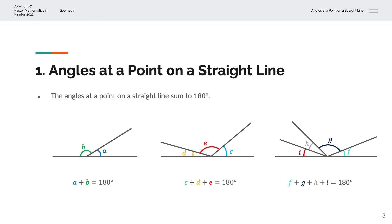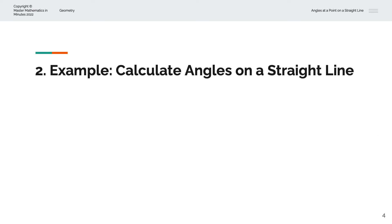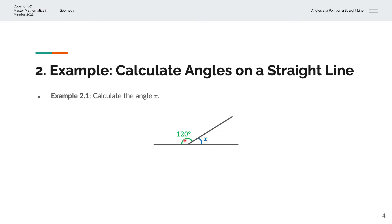Let's have a look at a couple of examples. In the first example, we're asked to calculate the angle x. We're given two lines, and this angle is labelled as 120 degrees. Because these are angles on a straight line, they sum to 180 degrees. So x is equal to 180 minus 120, which simplifies to x equals 60 degrees.